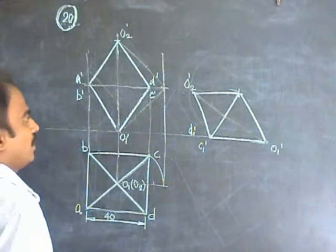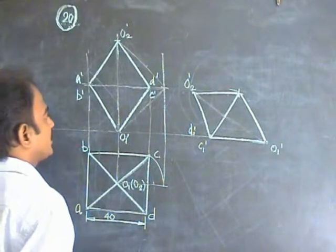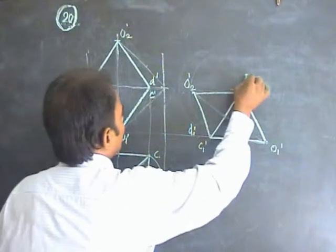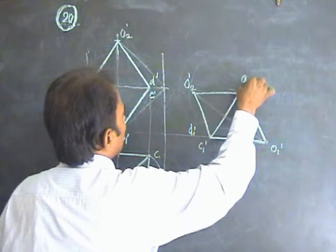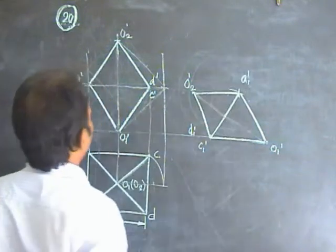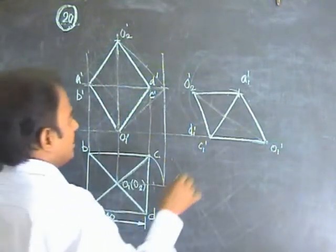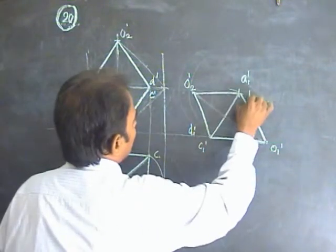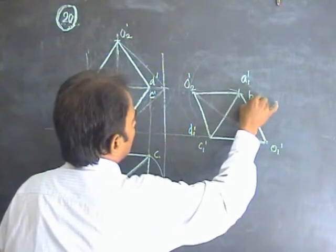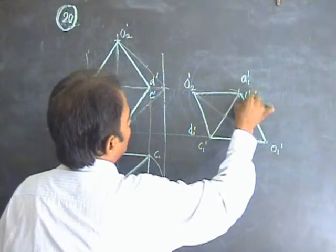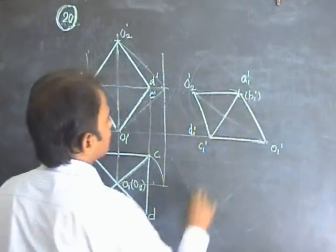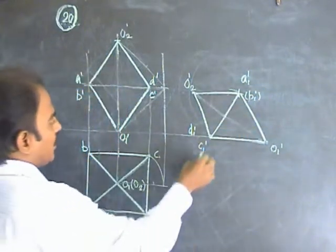Name the points of O2 dash: the points are A1 dash and D1 dash. A1 dash is visible, D1 dash is invisible.